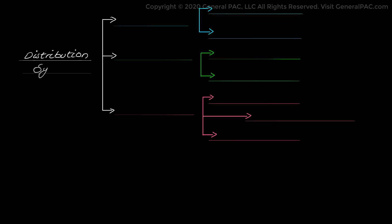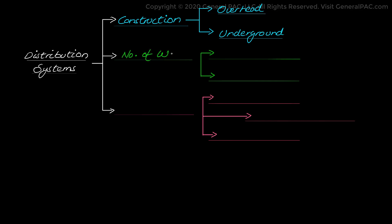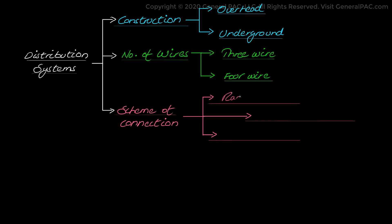The distribution system can be classified according to the types of conductors as overhead systems or underground systems; according to the number of wires, which could be three-wire or four-wire systems; and according to the scheme of connection as radial systems, ring main systems, or interconnected systems.